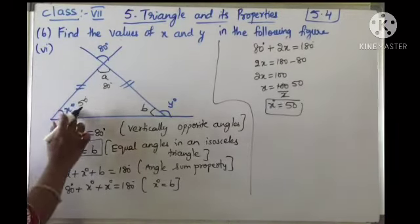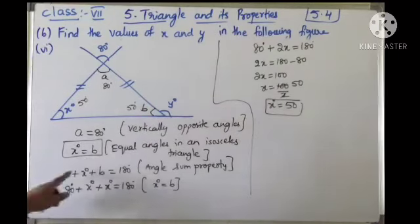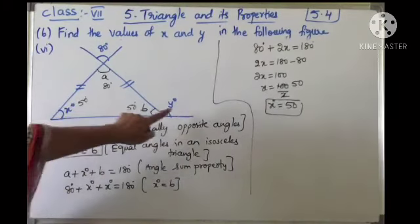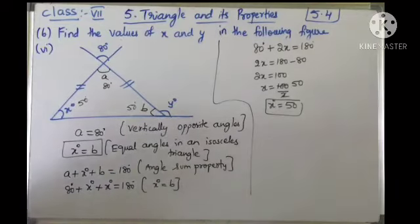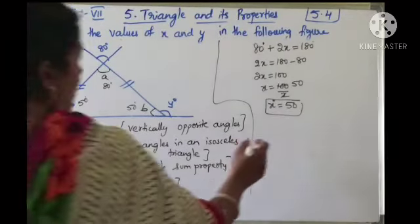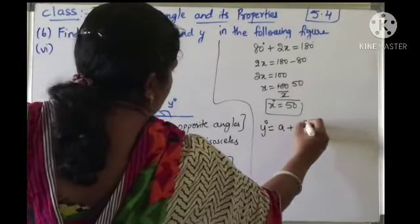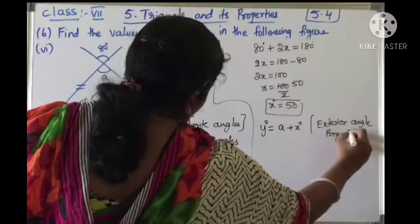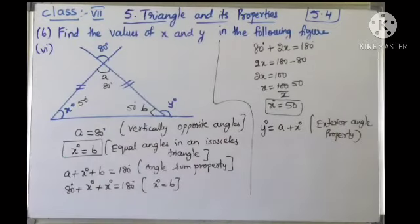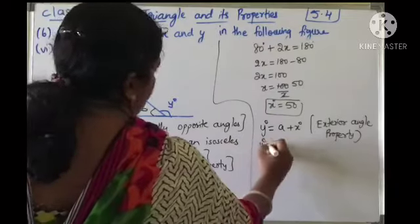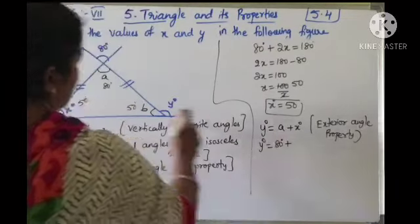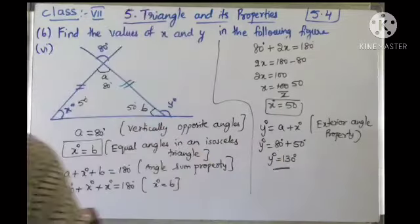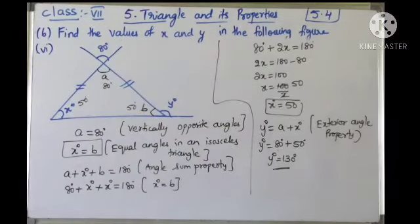So x is 50 and b is also 50, because x equals b. Now using the exterior angle property: y equals a plus x, which is 80 plus 50 equals 130 degrees. So finally, x is 50 degrees and y is 130 degrees.